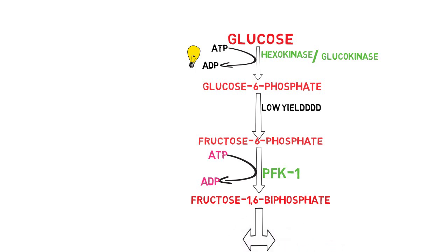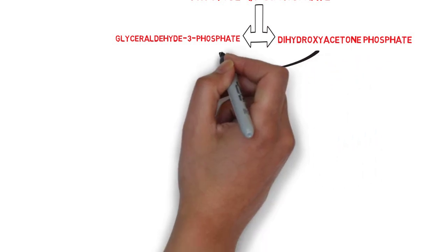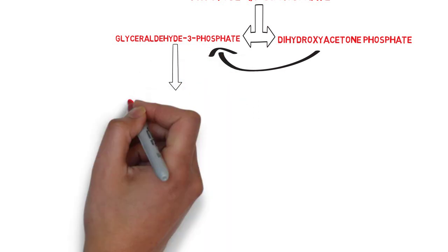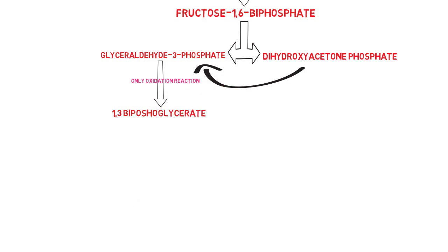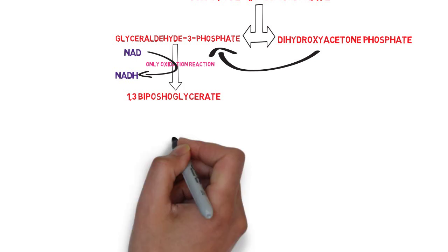After fructose-1,6-bisphosphate is formed, it sees a low-yield enzyme which converts it into two products: glyceraldehyde-3-phosphate and dihydroxyacetone phosphate. The dihydroxyacetone phosphate gets converted into glyceraldehyde-3-phosphate, so we have the formation of two molecules of glyceraldehyde-3-phosphate. This glyceraldehyde-3-phosphate is then converted into glyceraldehyde-1,3-bisphosphate. This is the only step in glycolysis in which there is an oxidation reaction. The electrons from oxidation are taken up by NAD+, which is converted into NADH, so we have the formation of an NADH molecule.